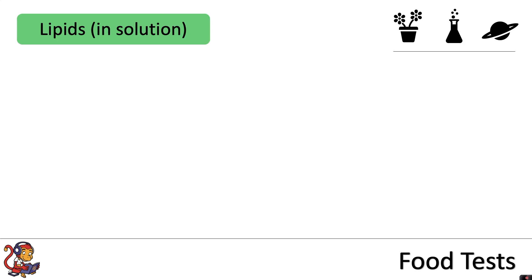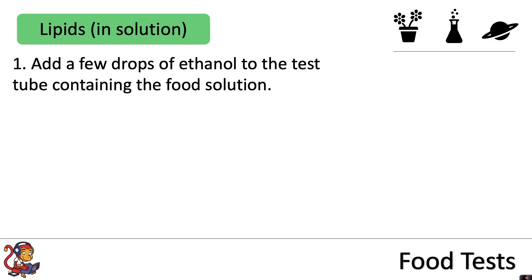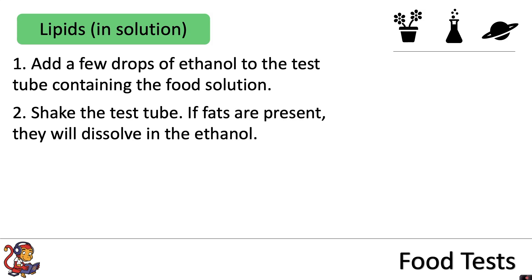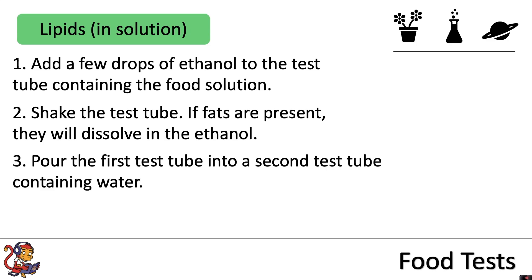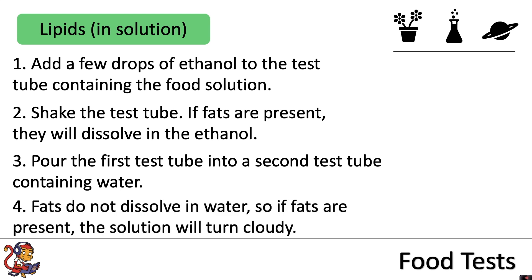For lipids that are in solution there are two different food tests that you could use. The first one is that you could add a few drops of ethanol to the test tube containing the food solution. Shake the test tube and if fats are present they will dissolve in the ethanol. You then pour the first test tube into a second test tube containing water. The fats do not dissolve in water, so if fats are present the solution will turn cloudy.